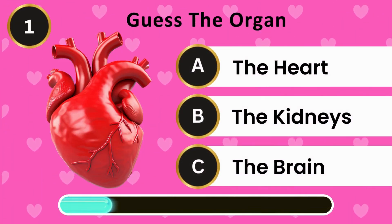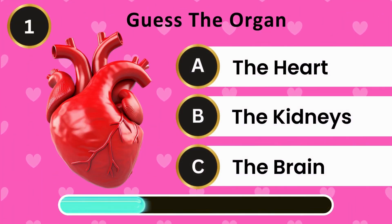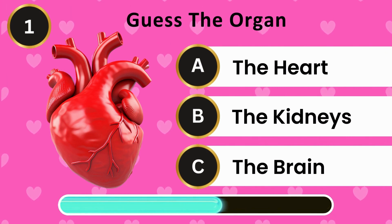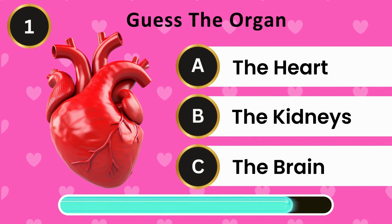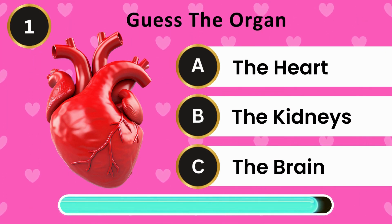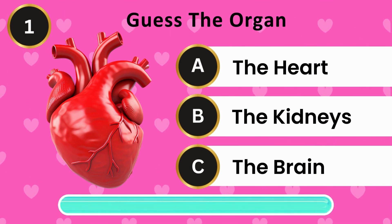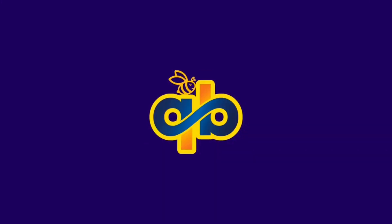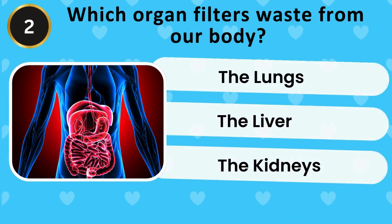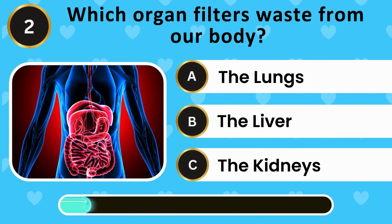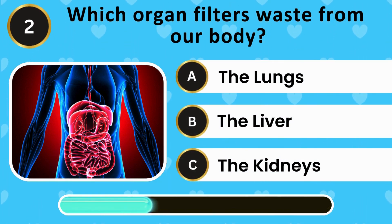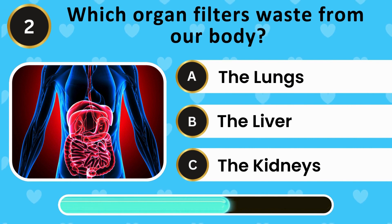Guess the organ: the heart, the kidneys, the brain. The answer is the heart. Which organ filters waste from our body? The lungs, the liver, the kidneys. The answer is the kidneys.